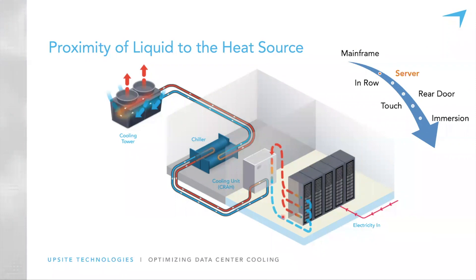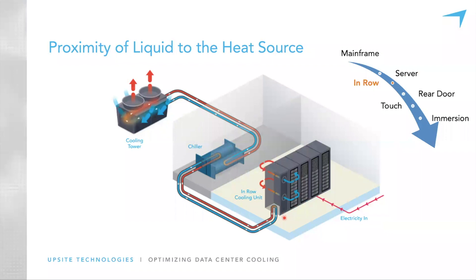Moving on to in-row cooling: instead of having the cooling at the perimeter of the room, we move the cooling closer to the load. A small cooling unit sits in the row of cabinets. Air from this cooling unit serves all the IT equipment in the row, picking up heat and bringing it back to the cooling unit, where a heat exchange process passes the heat to liquid, which then carries it out of the building. The liquid has moved a little closer to the heat source.